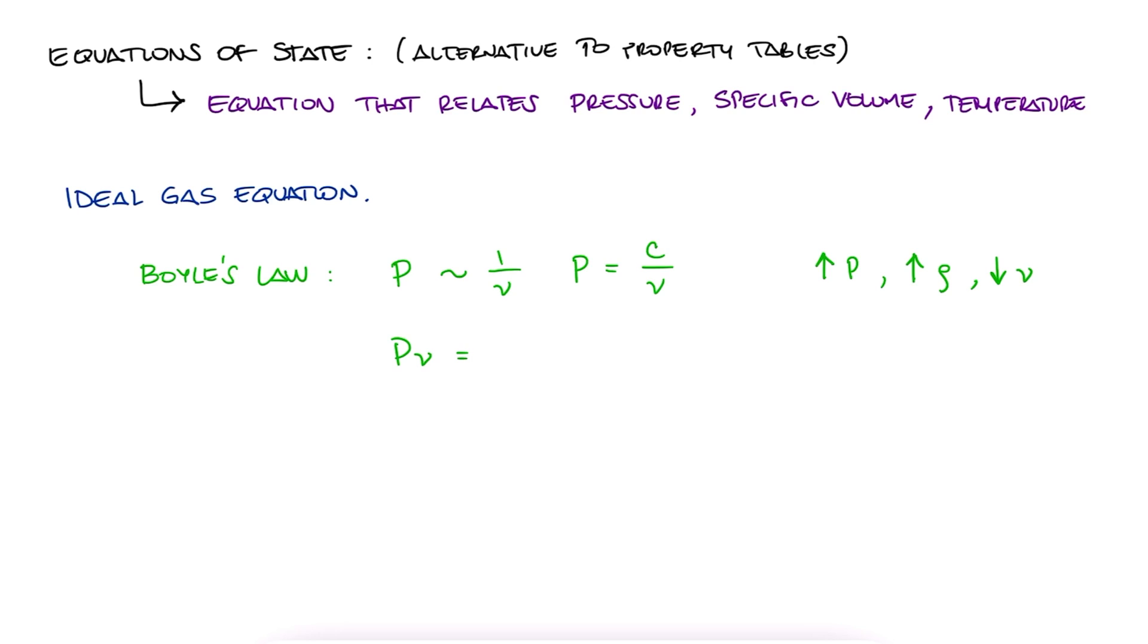This means PV is a constant. The Gay-Lussac law, or pressure law, states that pressure is directly proportional to temperature. More pressure, more energy for molecules to shake, meaning more temperature.